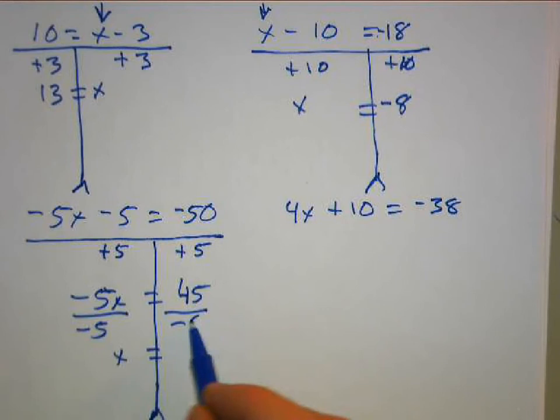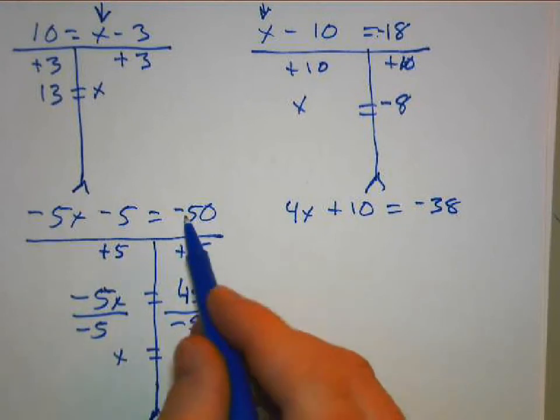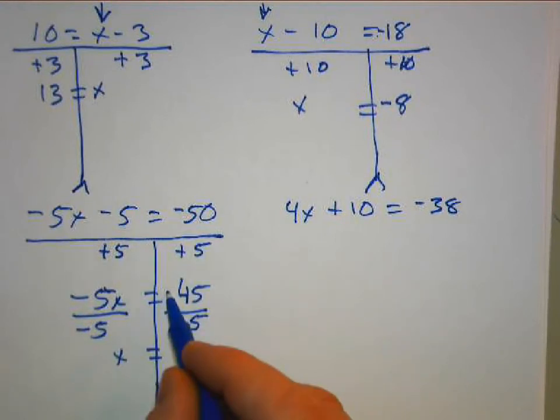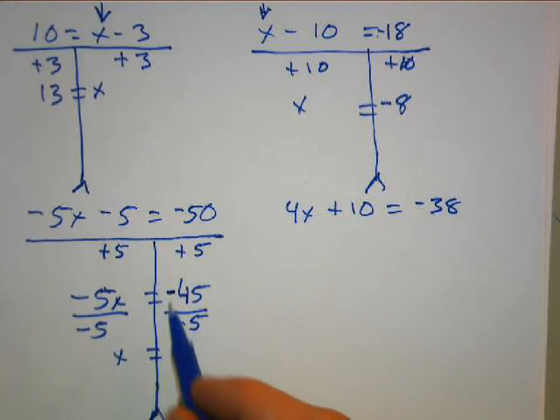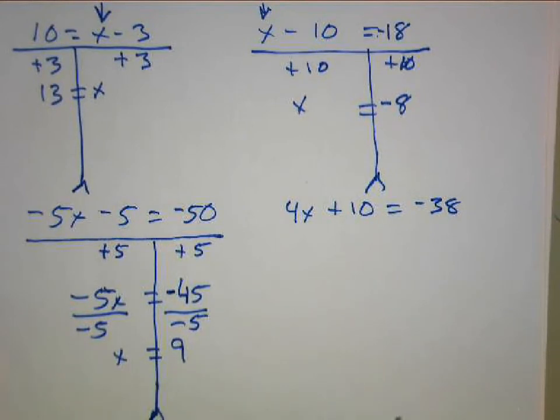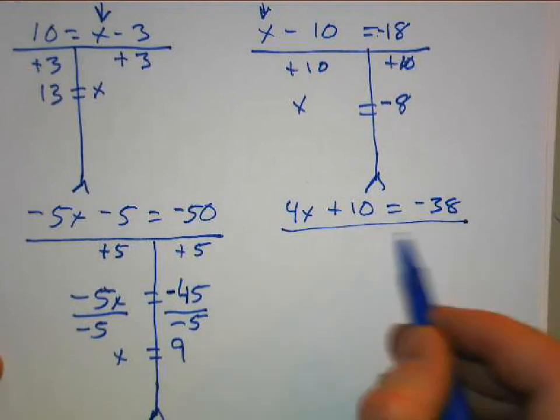45 divided by negative 5... Actually, a positive divided by... This is actually a negative because negative 50 plus 5 is still negative 45. So a negative divided by a negative here, negative 45 divided by negative 5, is going to be a positive 9. So X equals 9. Same thing here, we're going to draw our teeter-totter.